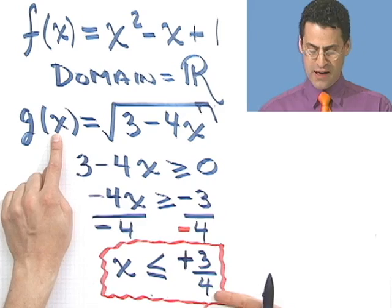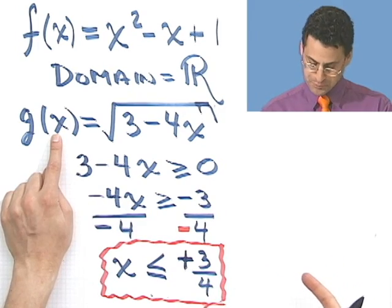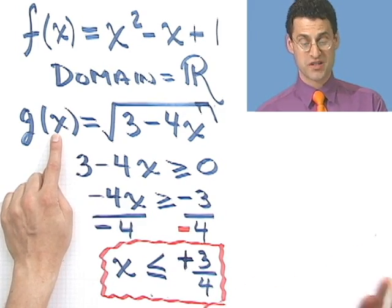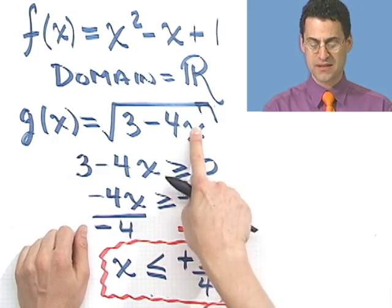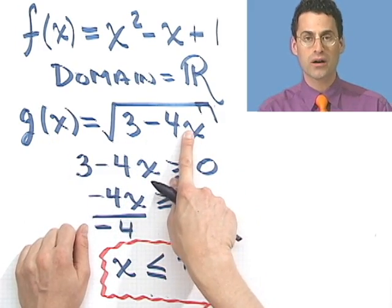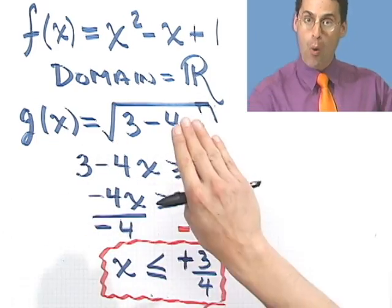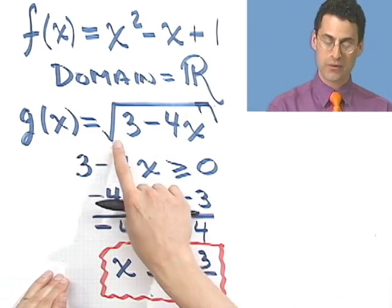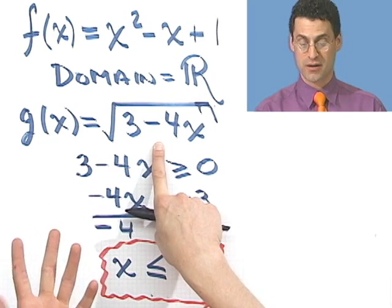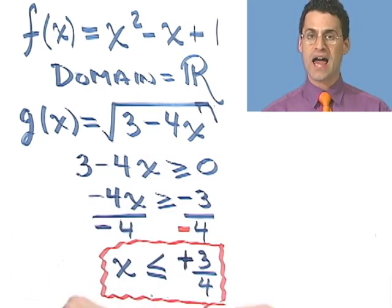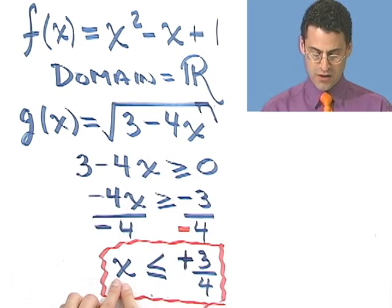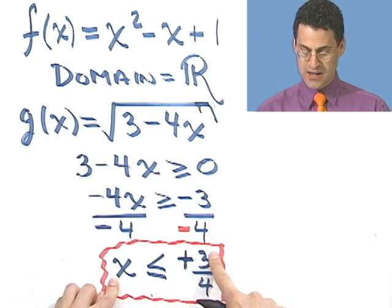So that means that the only allowable values that I could put in for x in this function g are any value for x that's less than or equal to 3 fourths. Look what happens if I put in a value bigger than 3 fourths. For example, let's say I put in the value 1, which is bigger than 3 fourths. If I put in the value 1 for x, look what happens. I see 3 minus 4, which is negative 1. And I'm taking the square root of negative 1. No! That's not going to happen, because that would not give me a real number. That's an imaginary number. So in fact, the only values for x which give me real numbers are the values of x that are less than or equal to 3 fourths.